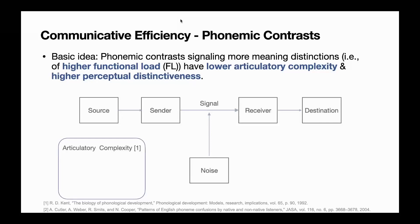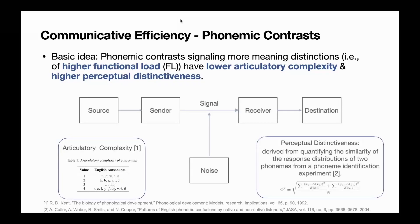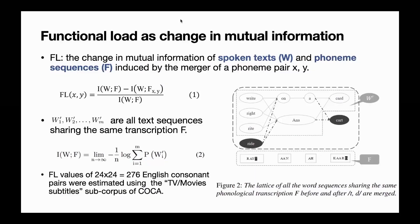Here we calculated articulatory complexity values of English consonants based on the model proposed by Kant, which reflects the growth in model control required to articulate a sound. Perceptual distinctiveness was derived from quantifying the similarity of the response distributions of two phonemes from a phoneme identification experiment. Functional load was quantified as the change in mutual information of spoken texts and phoneme sequences induced by the merger of a phoneme pair. You can refer to our paper for the mathematical details.